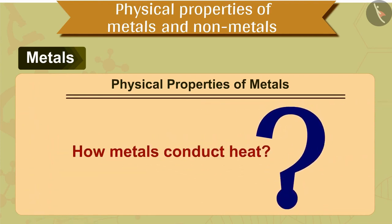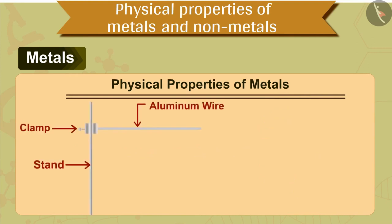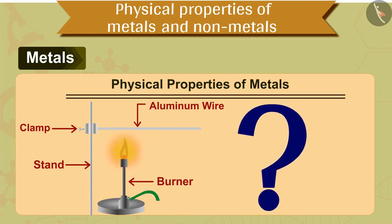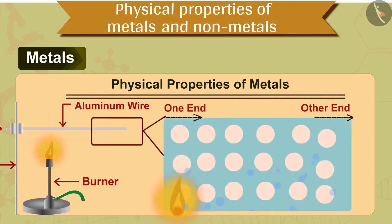But do you know how metals conduct heat? Let us understand this by an activity. Tie an aluminium wire to a stand with a clamp. Stick a pin using wax on the open end of the wire. Heat the wire near the clamp with a burner. After a while you will notice that the pin pasted with wax falls as the wax melts. But how did this become possible? How does heat reach from one end of the wire to the other?